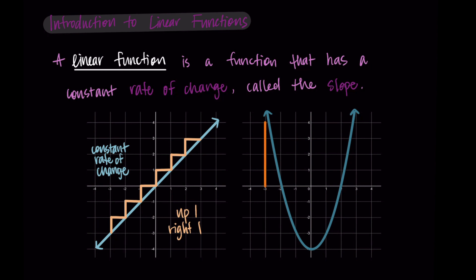However, if we look at the graph on the right, we could see that the first step is maybe down four to the right one, and then we have down three to the right one, down one to the right one.